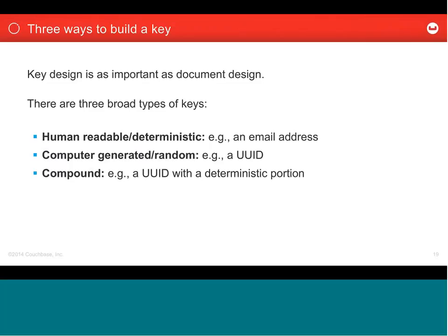There are three broad types of key we tend to see. One is something deterministic from data you already have — imagine creating a user profile for a website where users log in using their email address. At the point of logging in you have their email address, so you can key their user profile using that and do a simple lookup on it to get all of that person's data. Another way would be some kind of random or computer-generated key, and then there are compound keys — either a deterministic portion with semantic loading, or a UID with a deterministic portion.